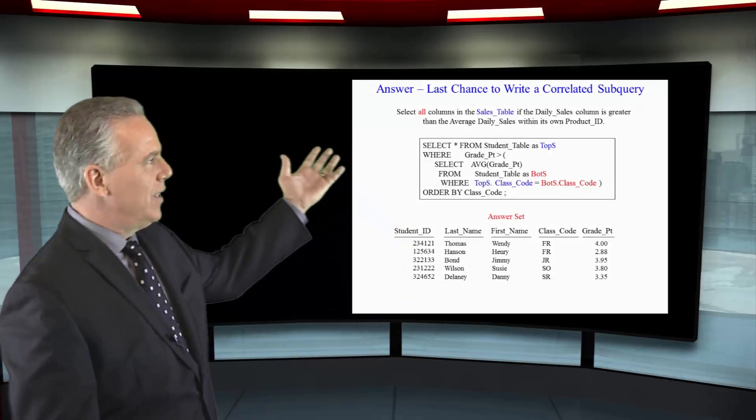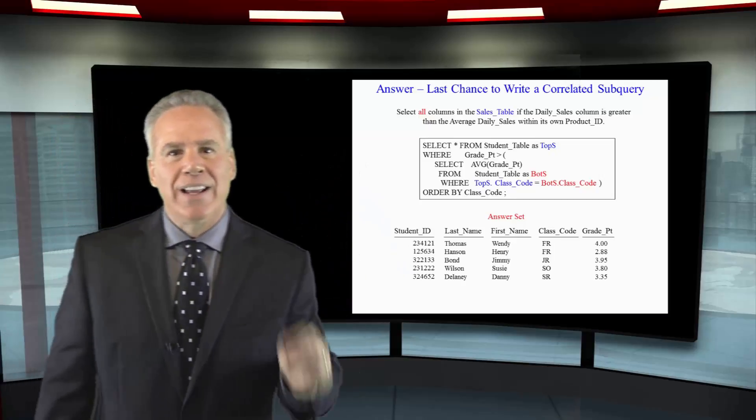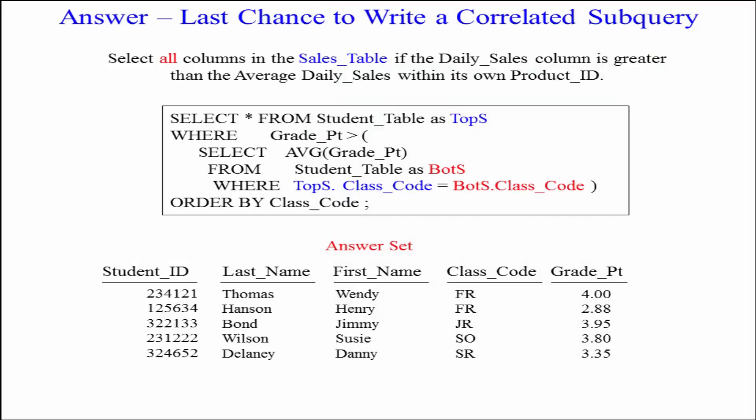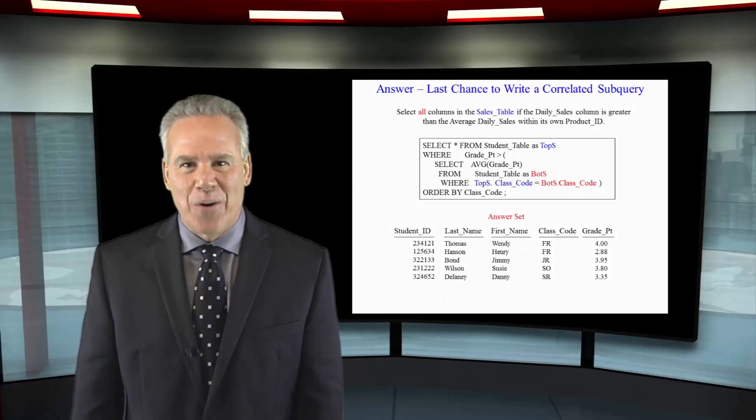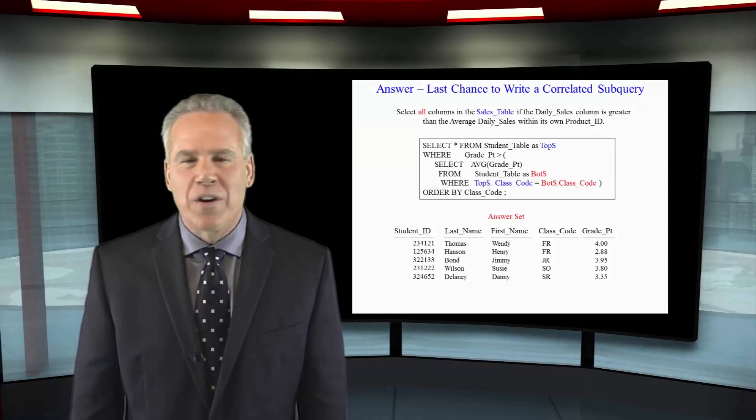The top query and the bottom query we alias differently, and then we have that WHERE top s dot class code equals bottom s dot class code. That is how you write a correlated subquery. Wonderful work. This lesson is brought to you by Coffing Data Warehousing.